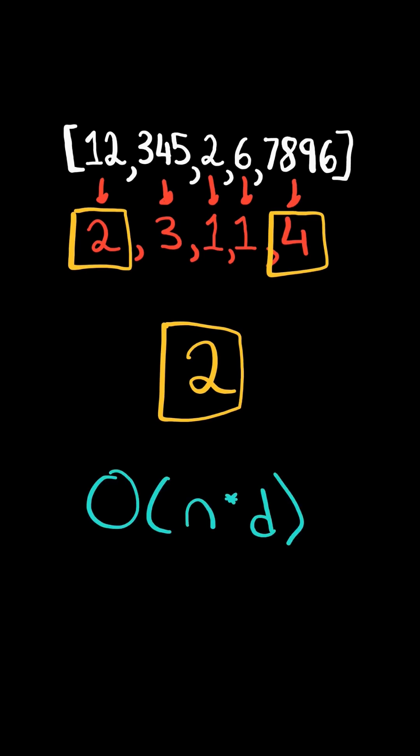We will solve this in O of n times d time, where n is the length of the array, and d is the average number of digits per number.